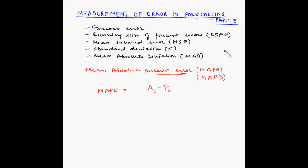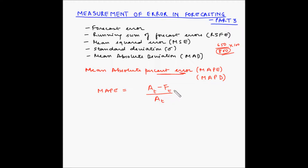Percent is always calculated based on a base data. For example, if you have 8 subjects each with 100 marks, the total is 800. If you score 650, the percent is 650 divided by 800 multiplied by 100. Similarly here, we are comparing the error to the actual demand, so the actual demand A_T goes in the denominator. This gives percent error as: (A_T minus F_T) divided by A_T, multiplied by 100.